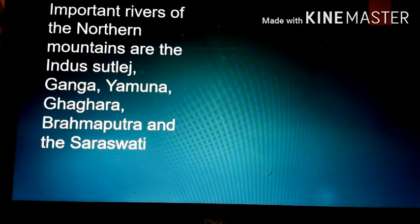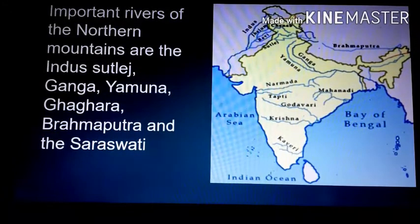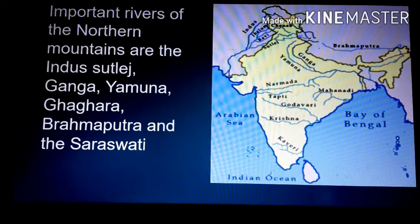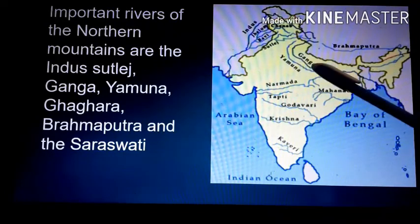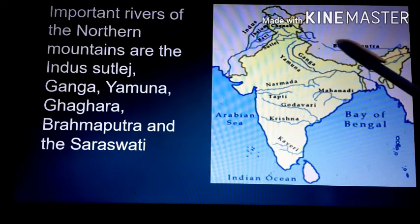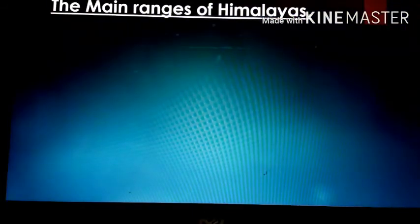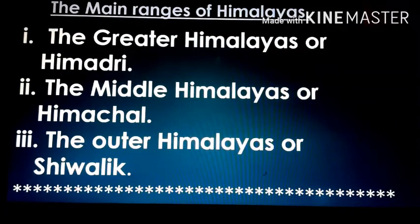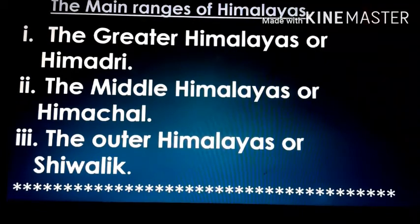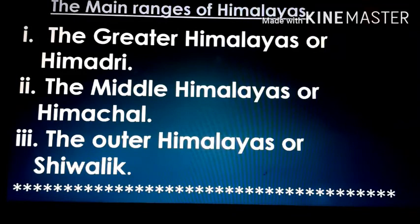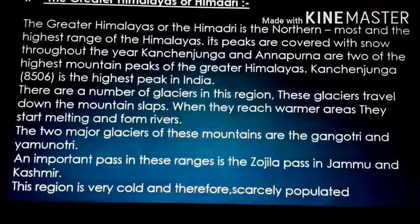The next topic is the important rivers of the northern mountains. The important rivers are the Indus, Satluj, Ganga, Yamuna, Brahmaputra, and Saraswati. The main ranges of the Himalayas are: the Greater Himalayas or Himadri, the Middle Himalayas or Himachal, and the Outer Himalayas or Shivalik. Let us now discuss the first range — the Greater Himalayas or Himadri.